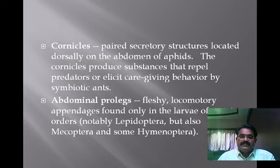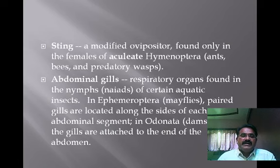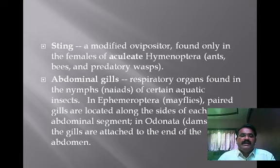Abdominal prolegs are fleshy locomotory appendages found only in the larvae of certain orders, notably Lepidoptera but also Mecoptera and some Hymenoptera. The sting is a modified ovipositor found only in the females of aculeate Hymenoptera — for example, ants, bees, and predatory wasps — which have the sting in the abdominal region.